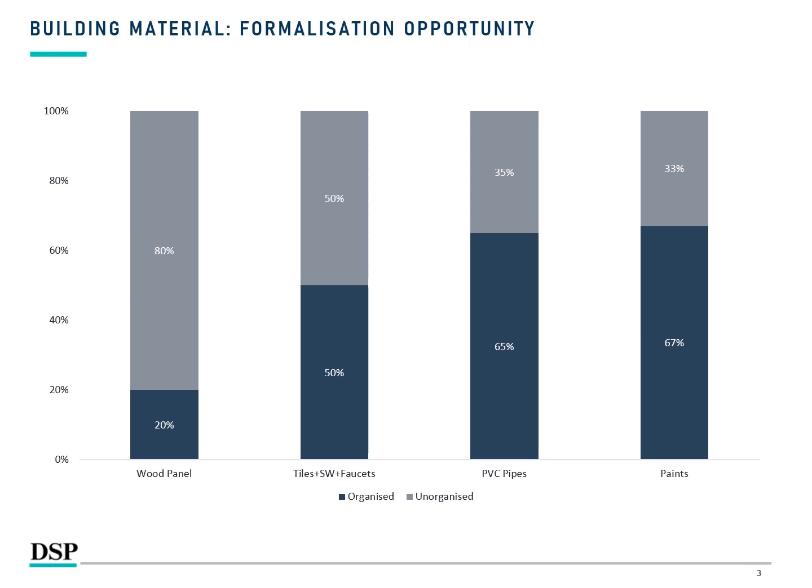In the Tile segment, the Morbi cluster, which is the major production hub, has already been under pressure because of GST, the ban on coal usage, and in the last two years, their focus on exports has increased a lot. Hence, their presence in the domestic market has come down. Exports of tiles, which used to be sub-10% in the past, have now increased to almost 30-35% of overall tiles manufactured in the country, reducing their focus on the domestic market and giving benefit to branded players. PVC Pipes and Paints have already traveled the path of formalization to a great extent. So the runway for growth for Wood Panel and Tiles and Sanitary Ware Faucets will be much higher for branded players.